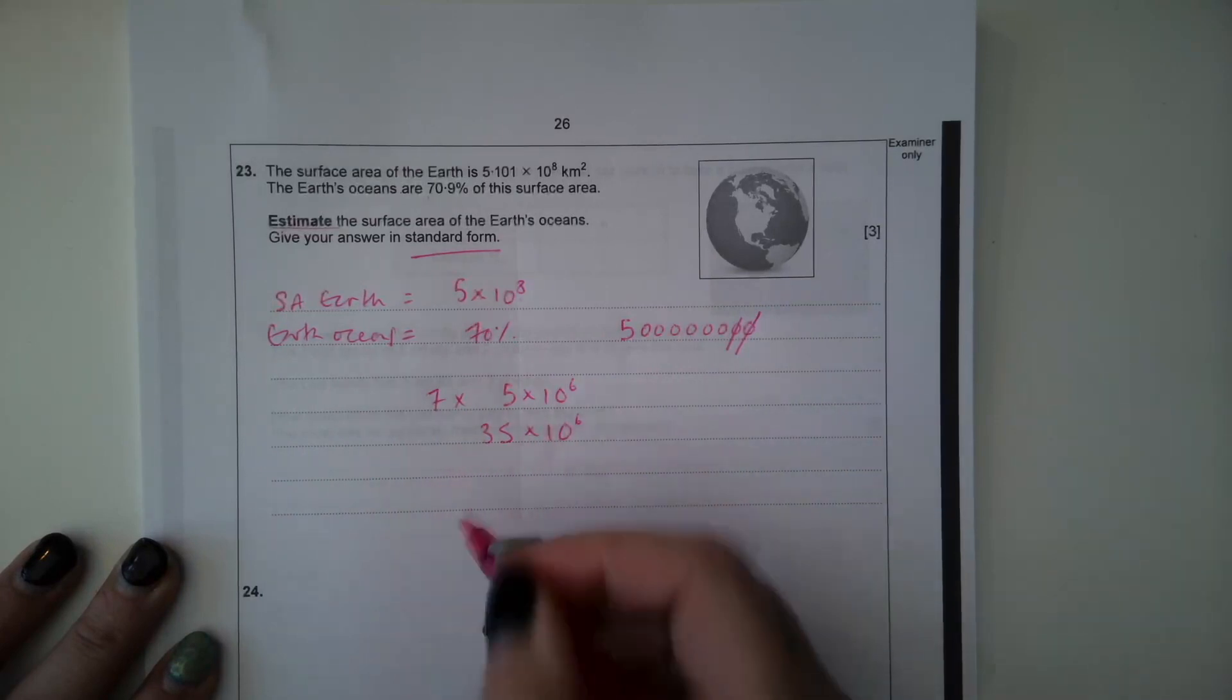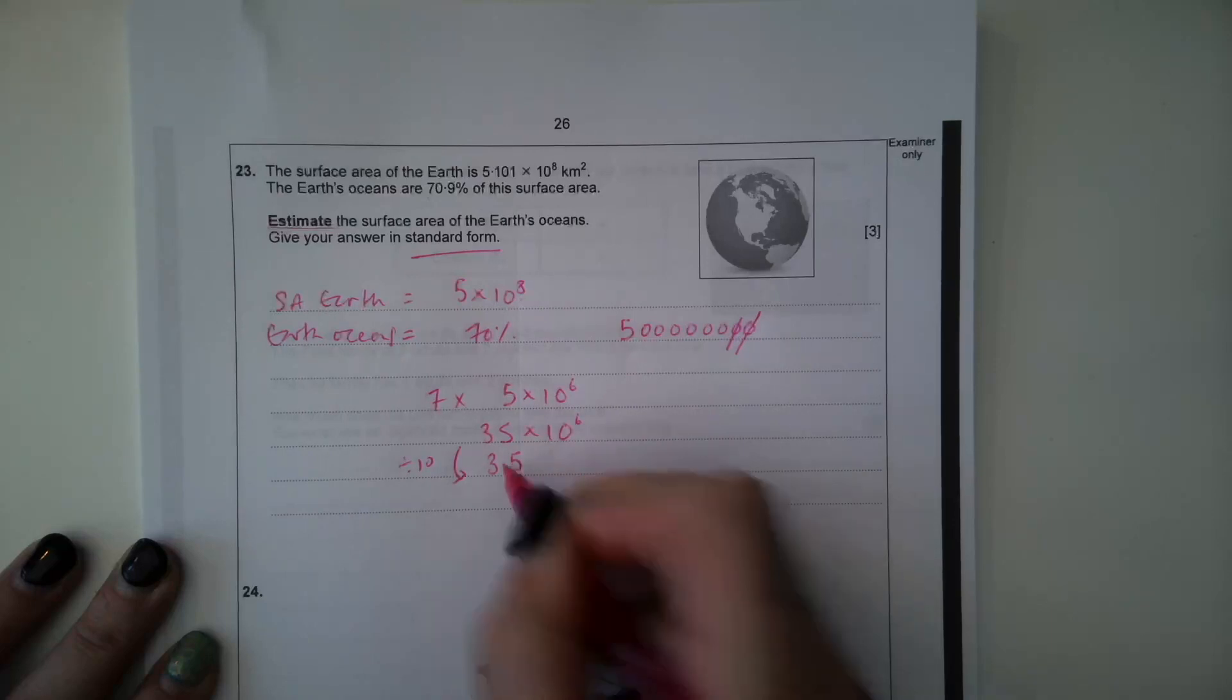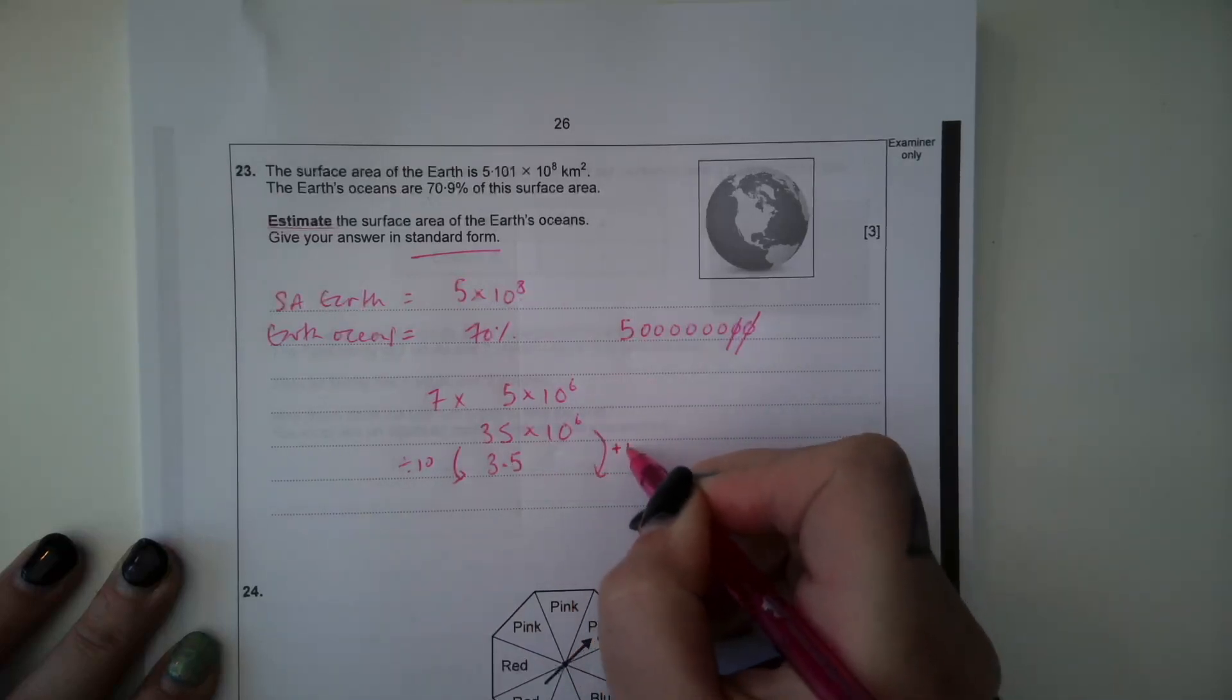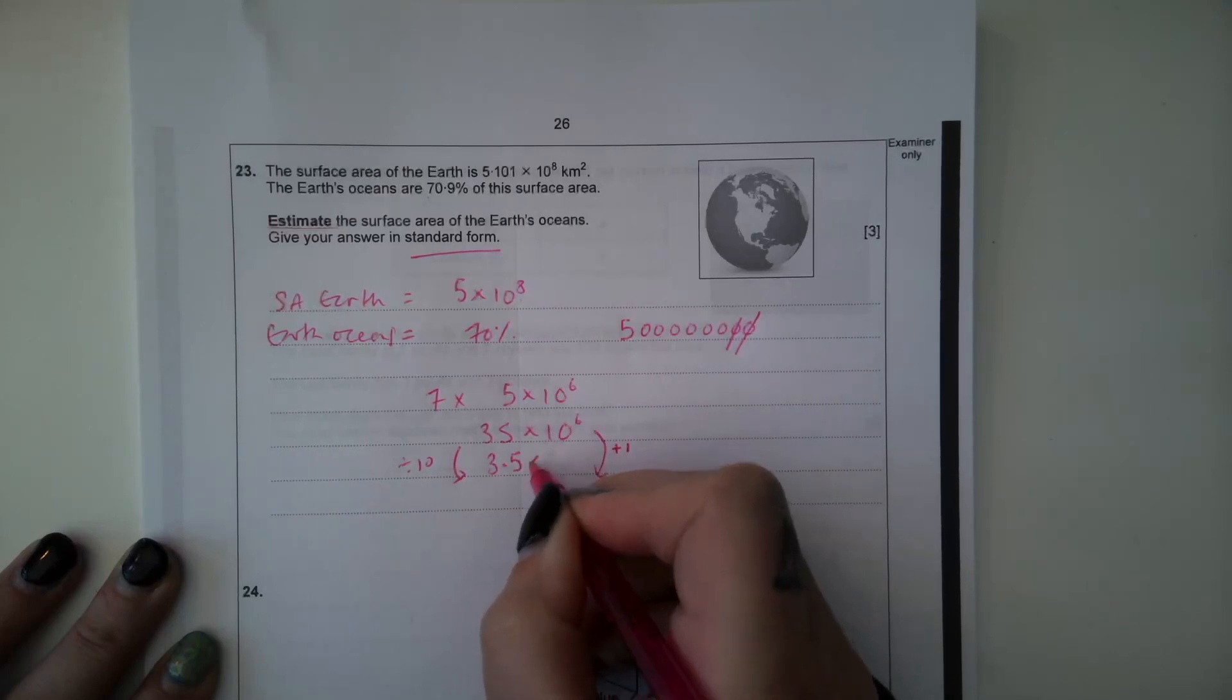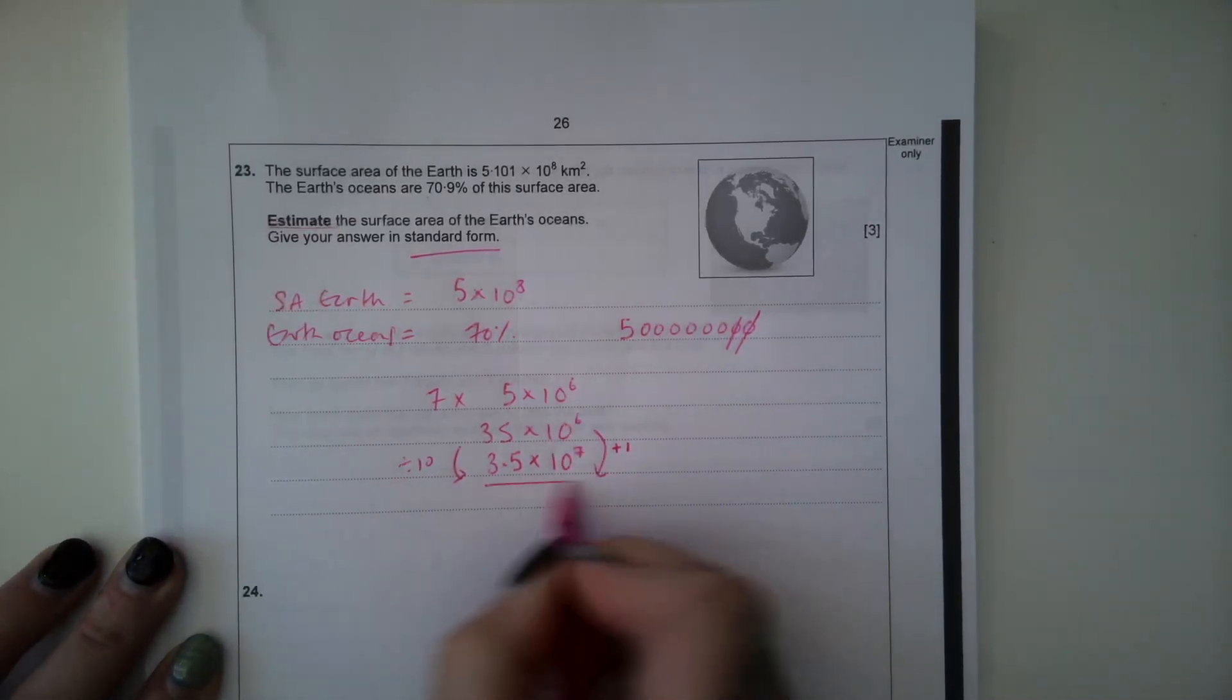It wants our answer in standard form. This is not in standard form because this first number needs to be between 1 and 10. So I'm going to have to divide this by 10 to make it 3.5, which means I need to increase that power by 1 because I need to multiply it by another 10 if I was going to convert it back to a normal number.